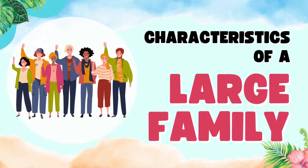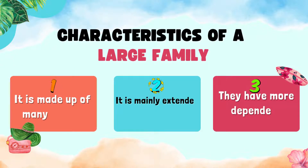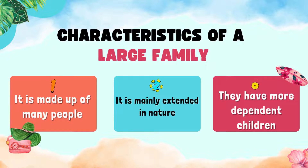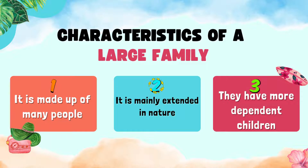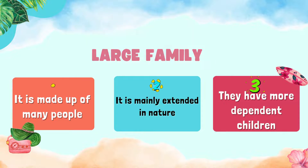What are the characteristics of a large family? Number one, it is made up of many people — father, daddy, mommy, children, grandma, grandpa, uncles, aunties, many people. Number two, it is mainly extended in nature — it includes the nuclear family members and blood relatives. Number three, they have more dependent children in a large family.